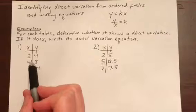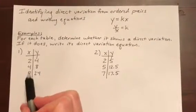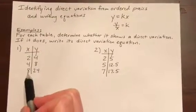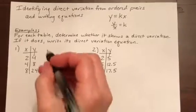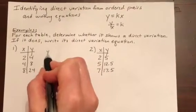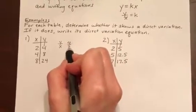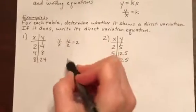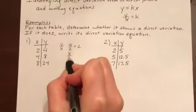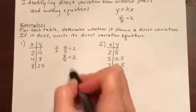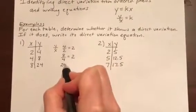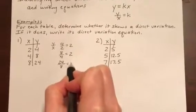So let's look at the first table. Our ordered pairs are 2, 4, 4, 8, and 8, 24. Okay, if we look at the ratio y to x in each one of these cases, we would have 4 over 2, which is 2, 8 over 4, which is 2, and 24 over 8, which is 3.